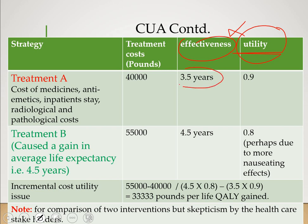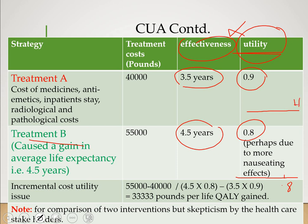For example, 3.5 life years is multiplied by a utility of 0.9, and 4.5 life years is multiplied by a utility of 0.8. A utility of 0.8 for treatment B means the patient's health status is at the 0.8 level on the scale — below perfect health of 1.0. A utility of 0.9 is closer to perfect health. The net patient preference determines the utility of each treatment modality. These methodologies are used especially in oncology.